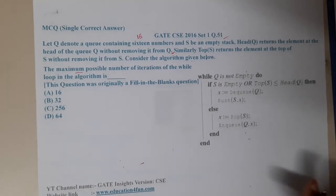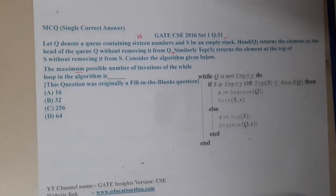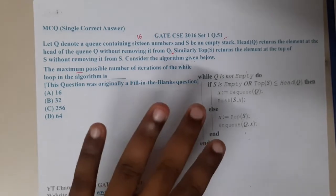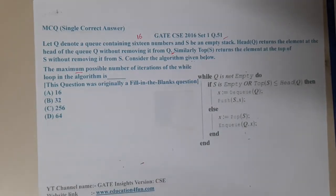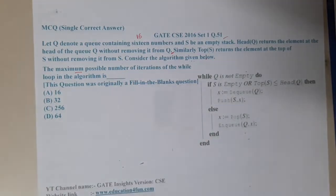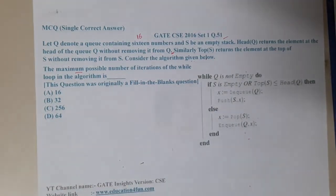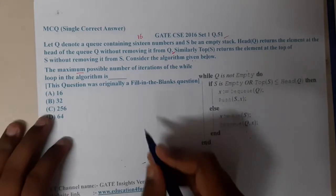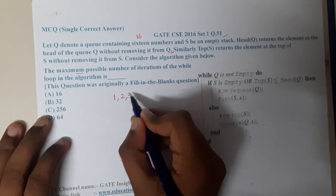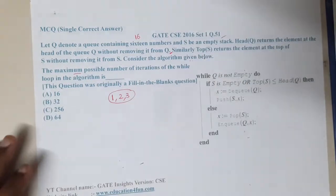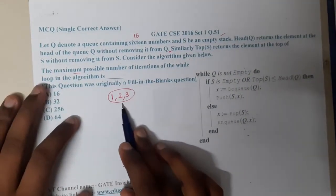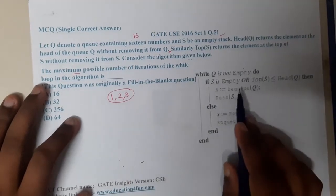Since there are 16 numbers, let us simplify by taking just three numbers — that will be easy to trace. So let us take the numbers one, two, and three on a smaller case.